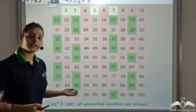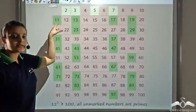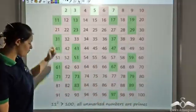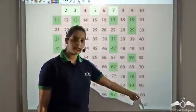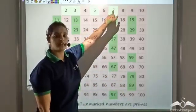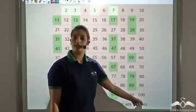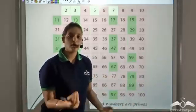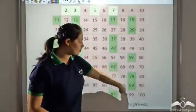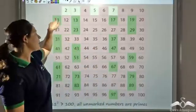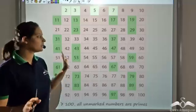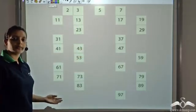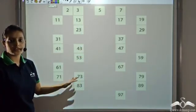Eratosthenes found that you can stop this process when the square of the current number is greater than the largest number in the list. 11 squared is 121, which is greater than 100. We could not stop at 7 because 7 squared is 49, which is not greater than 100. But as soon as we reach 11, its square exceeds 100, so we stop. All the numbers that had 11 as a factor were already removed, so the remaining numbers are the prime numbers from 2 to 100.